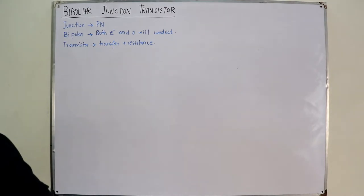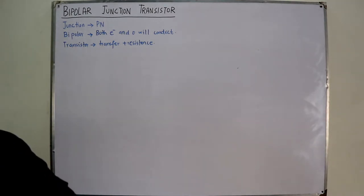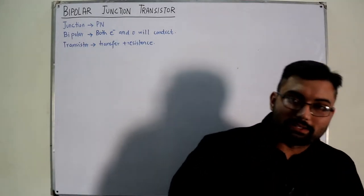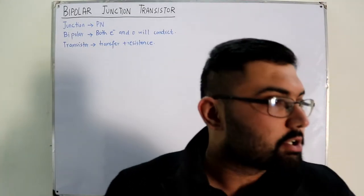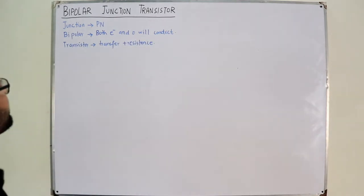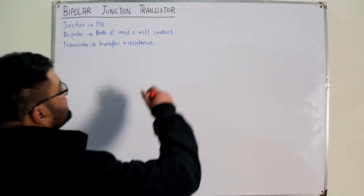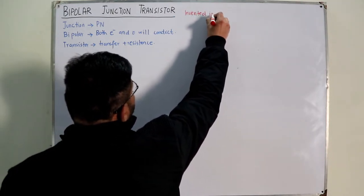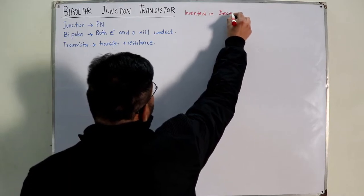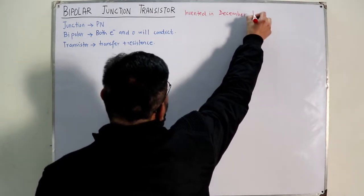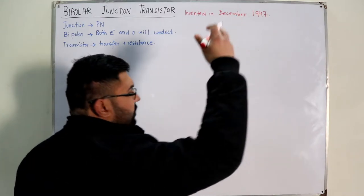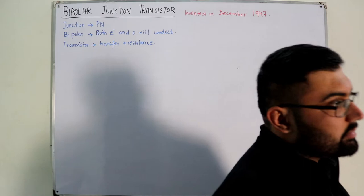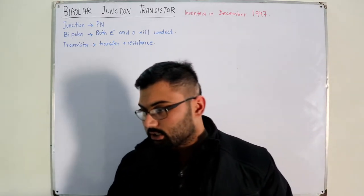The bipolar junction transistor was invented in December 1947, shortly after independence. The scientists who invented it include William Shockley, who is an important figure we'll discuss further. The team of three inventors received the Nobel Prize in 1956.